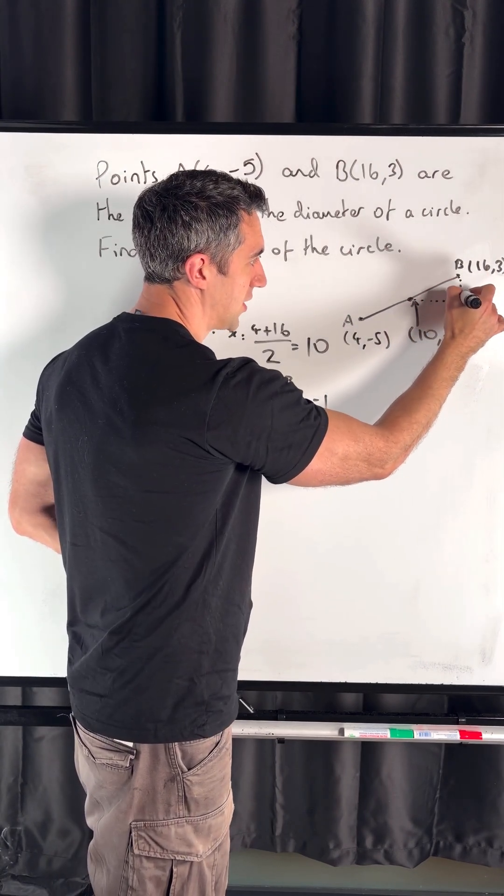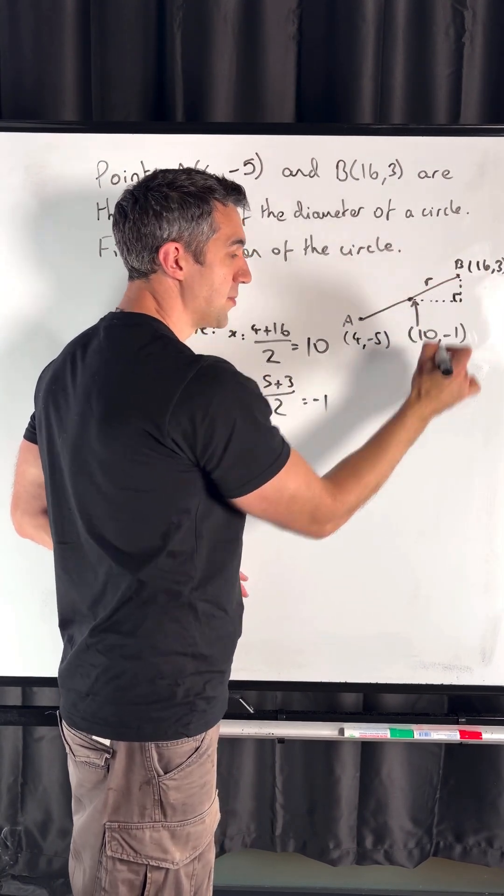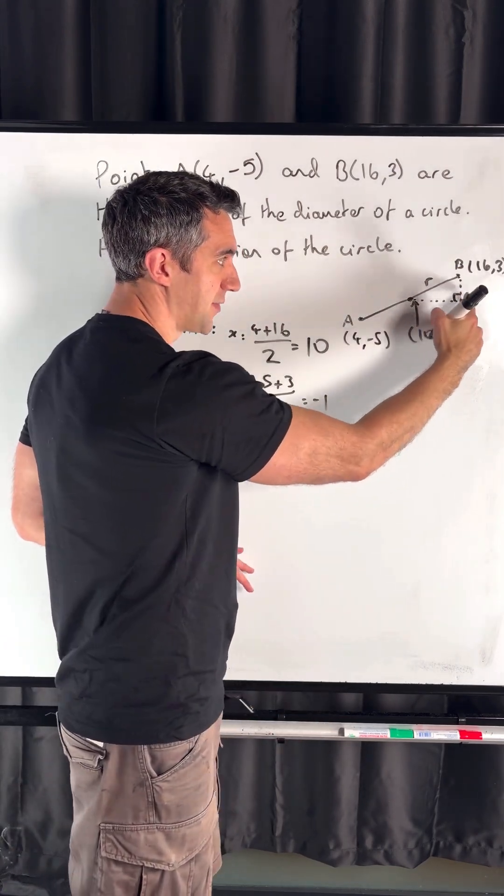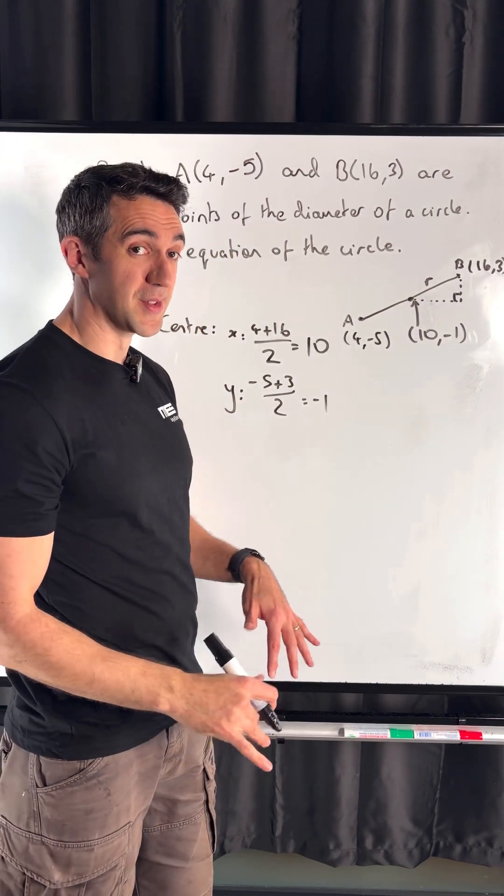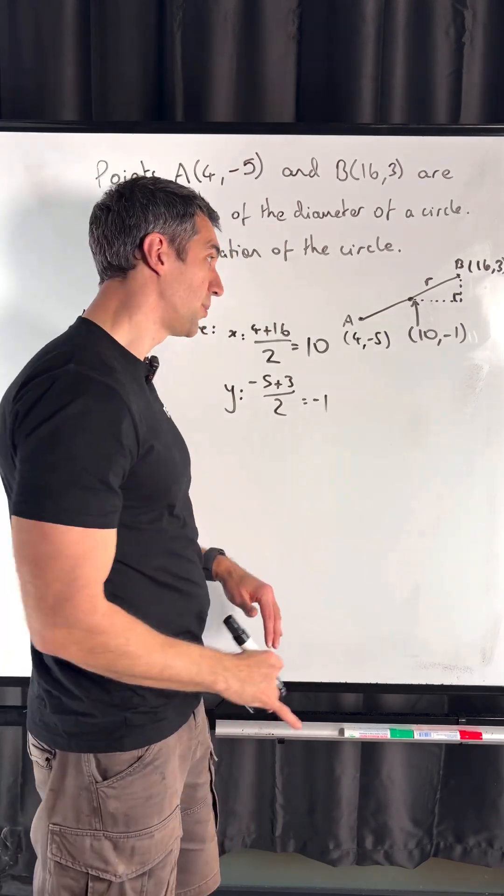Drawing a right-angled triangle on the diagram, the radius is the hypotenuse with the legs being the difference in x and difference in y. Similar to finding gradients, but instead of dividing, we apply Pythagoras.